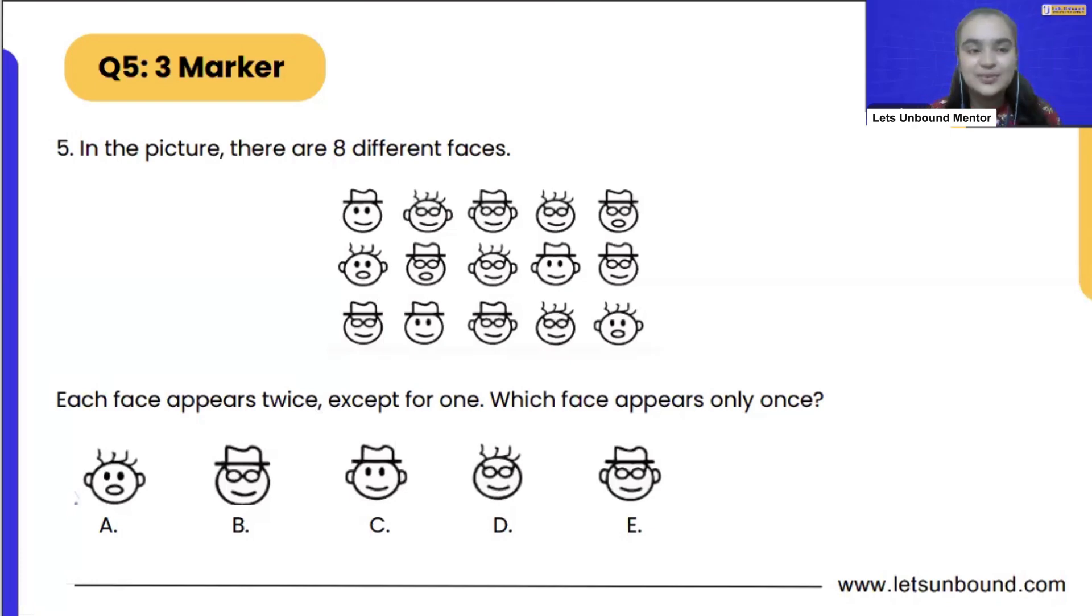this together. In the picture, there are eight different faces. Each face appears twice, except for one. Which face appears only once? So there are eight different faces, right? And we have to find out which one appears only once. Super easy question, right? So let's